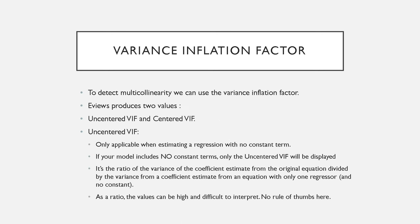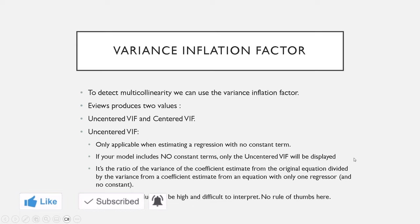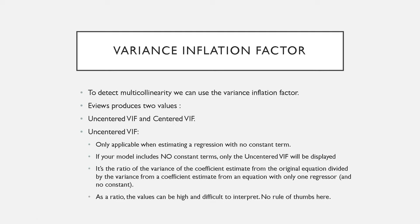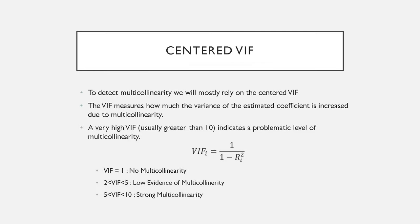Now let's talk about how to detect multicollinearity. We're going to be using the Variance Inflation Factor. EViews is going to produce two values: the uncentered VIF and the centered VIF. The uncentered VIF is only applicable when we are estimating a regression without a constant term. The centered VIF is the ratio of the variance of the coefficient estimate from the original equation divided by the variance from a coefficient estimate from an equation with only one regressor and no constant. As a ratio, these values can be high and difficult to interpret, so we're mostly going to be using the centered VIF.